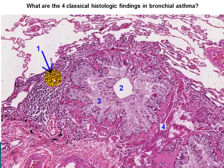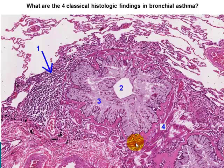In airway remodeling, there is goblet cell hyperplasia and metaplasia, dense inflammatory infiltrate with eosinophils and neutrophils, bronchial muscle hypertrophy, hyperplasia of submucosal glands, edema, and thickening of the basement membrane and smooth muscle layer. In atopic asthma, eosinophils are prominent alongside neutrophils, lymphocytes, and mast cells.